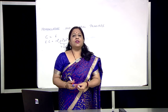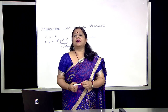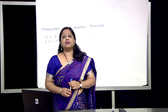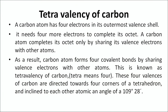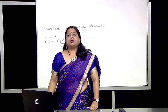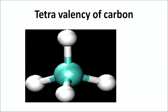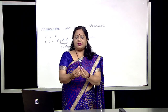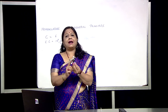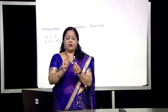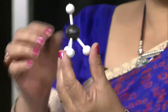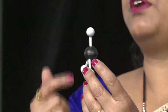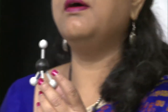Tetra means 4. These 4 valencies of carbon are directed towards 4 corners of a regular tetrahedron, inclined to each other at a bond angle of 109 degrees 28 minutes. Here is the model which shows you that in the center you have a carbon — the black ball is carbon — and here you find the 4 hydrogen atoms. So it looks like a regular tetrahedron with an angle of 109 degrees 28 minutes.